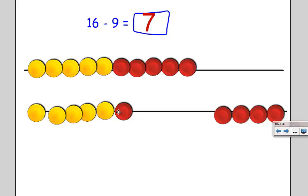We could do this problem by a different way on our rekenrek. We could start with 16, and now I'm going to try and take nine away. Well, if I look at my bottom row, I don't have nine to take away there. I only have six, so I can't take nine away from that. But I do have 10 on my top row, so I can take nine away from that.